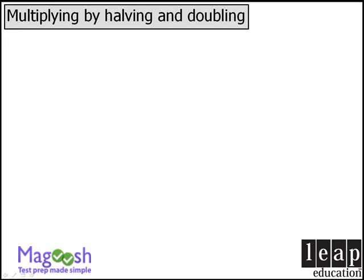In this video, we'll examine a technique that can occasionally save you some time when multiplying two numbers. The premise is that if we take two numbers in a certain product and double one number and halve the other number, then the product of our two new numbers will be the same as the product of our original numbers.